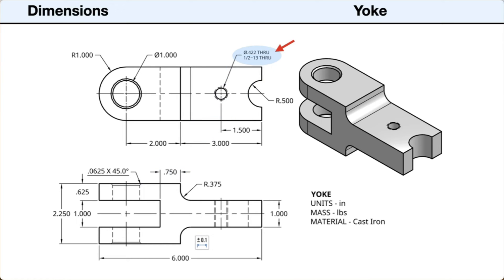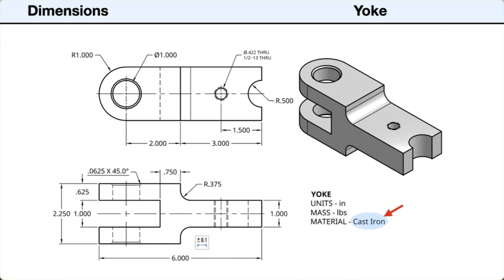On the tongue end, the threaded through hole is 1.5 inch by 13 threads per inch. The semicircular end hole has a radius of 0.5 inches or a diameter of 1 inch. The fillet has a radius of 0.375 inches. The top and bottom chamfer on the hole through the yoke is 0.0625 inches at 45 degrees. The material is set to cast iron. The mass is set to pounds.